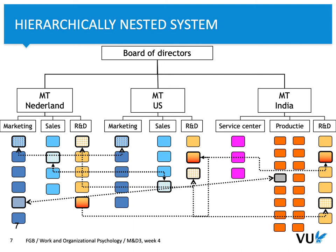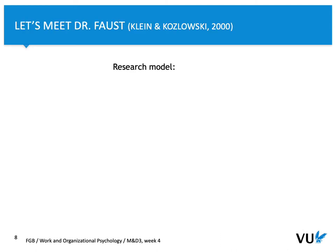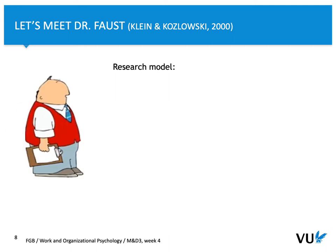When we study organizations, we want to understand not only what guides individual behavior, but also what guides team behavior and the outcomes of specific departments, branches, and the overall company. To understand the outcome of the whole company, we need to understand what happens within this hierarchically nested system. To do that, we need to take into account a research model — let's meet Dr. Faust, who will explain how complex organizations can be.